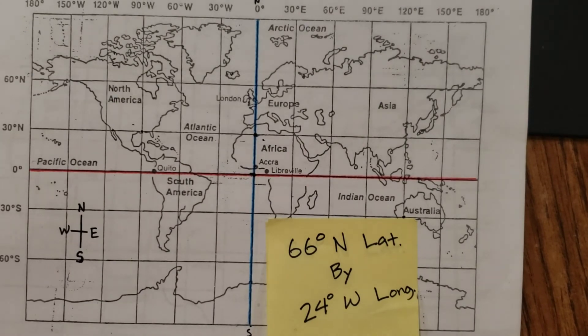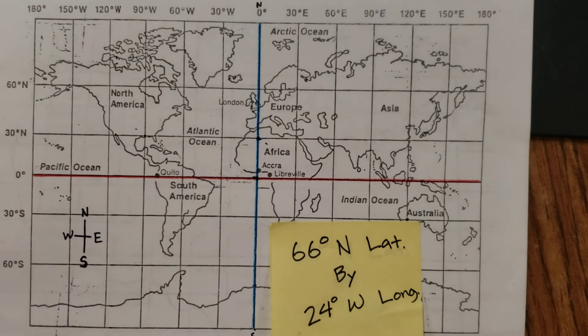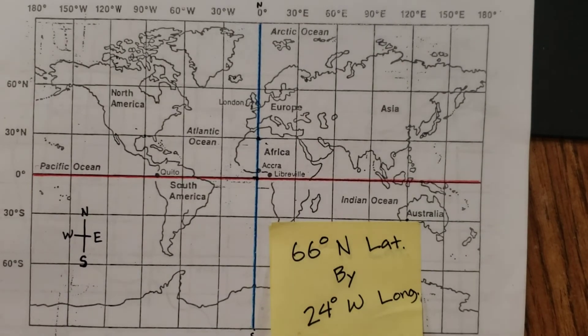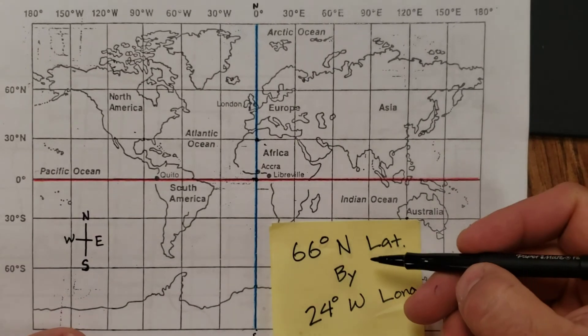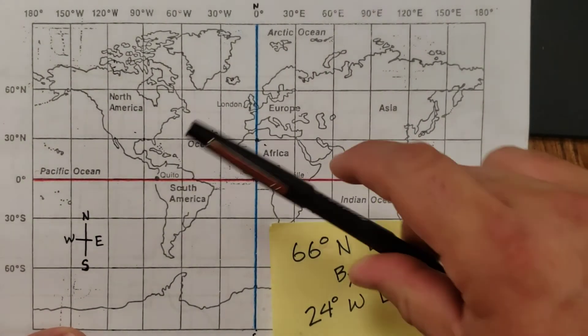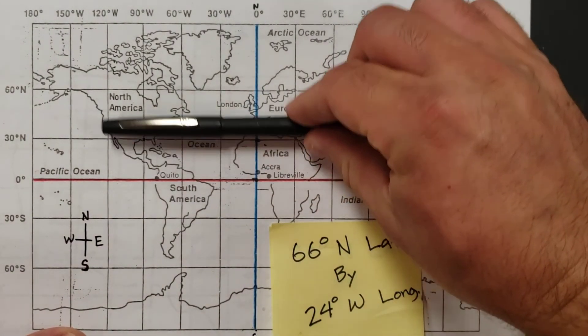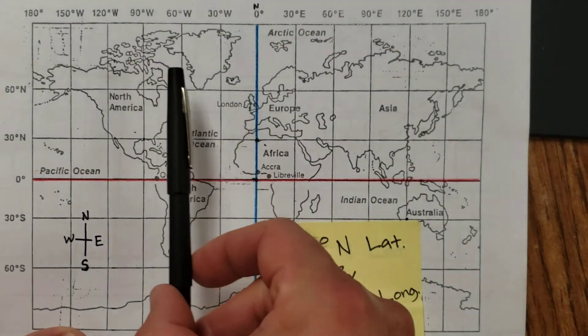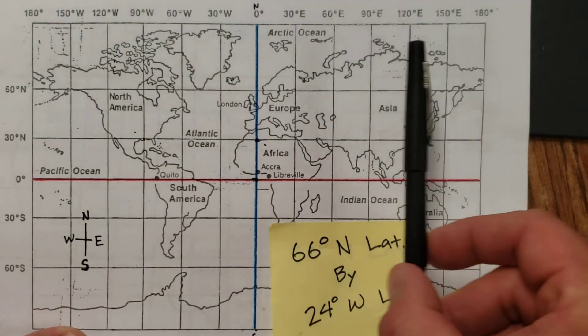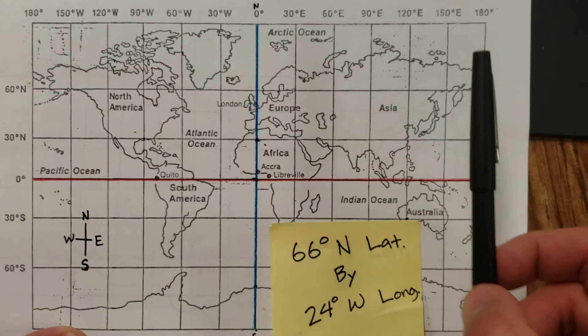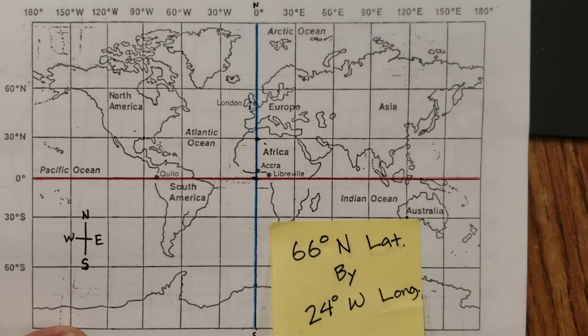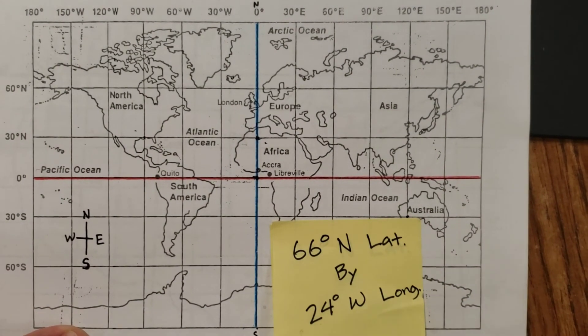So there you have a quick video on how to locate locations using latitude and longitude. You just got to think first about which way you're talking about. Is this the latitude? These are latitude lines and these guys going north and south are longitude lines. And then find where they cross and you've got it. Thanks for listening.